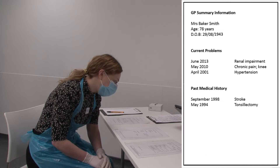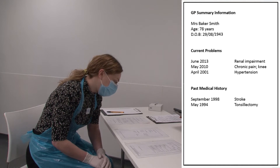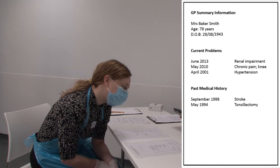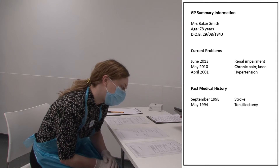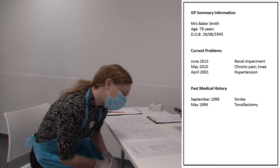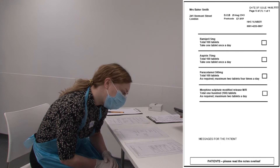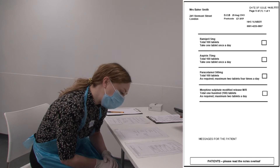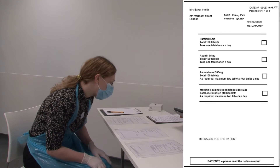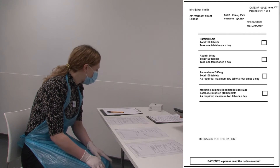The GP summary information says that the current problems for this patient include renal impairment, chronic pain of the knee, and hypertension. The past medical history says that this patient had a stroke and tonsillectomy. The prescriptions show that the patient is on Ramipril, aspirin, paracetamol, and morphine sulfate. Now the station will be played through — play the role of the examiner and complete the mark scheme. We'll see how you marked each question at the end.